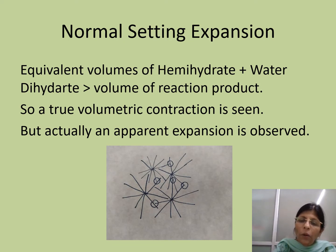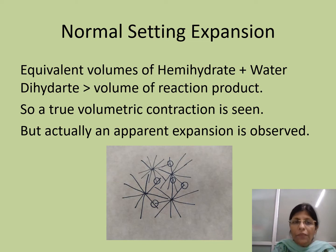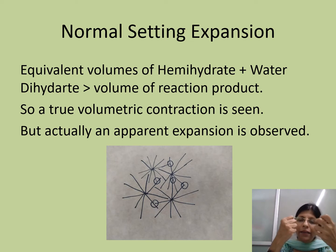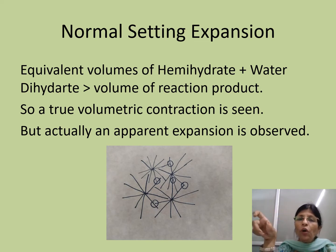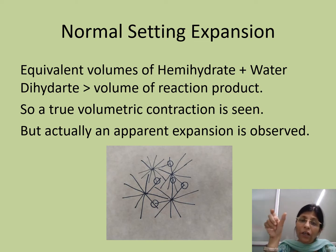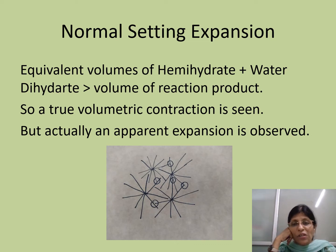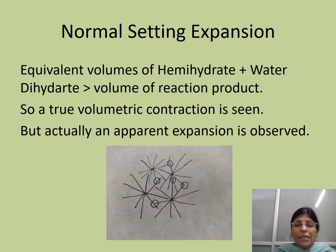If we look at the setting of plaster — we are mixing powder into water and the material sets — the equivalent volumes of hemihydrate and water, that is a particular amount of water plus a particular amount of powder, is more as compared to the final product. So a true volumetric contraction is seen. However, physically an apparent expansion is observed.